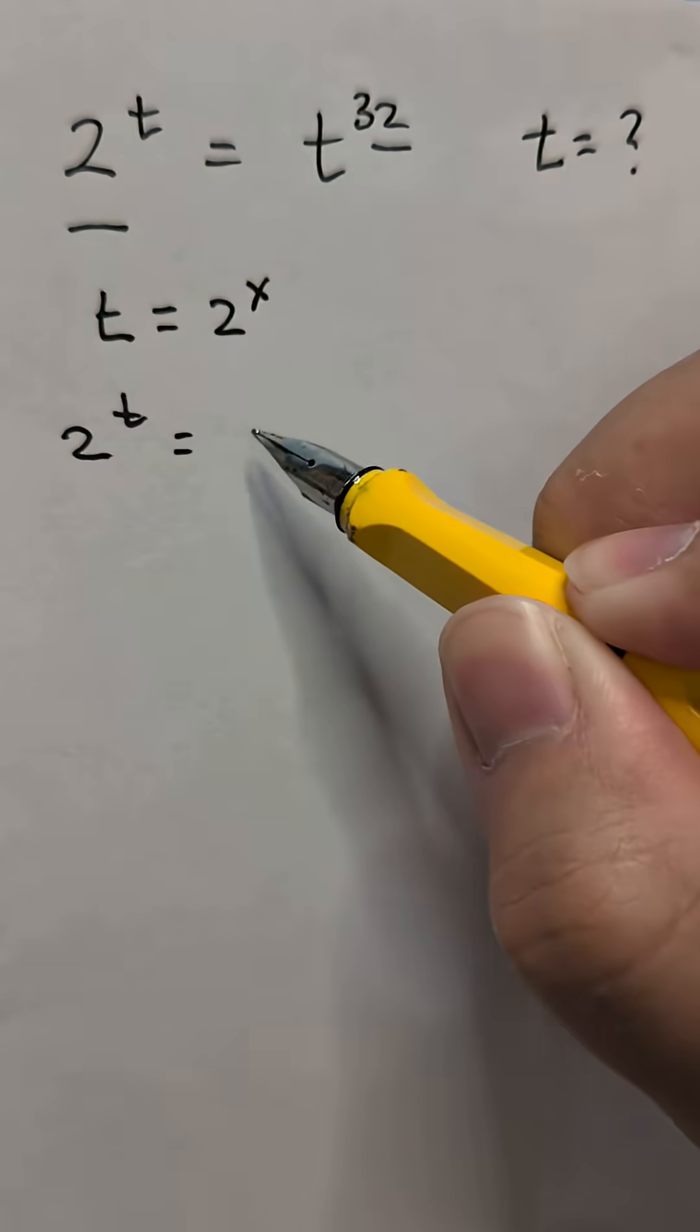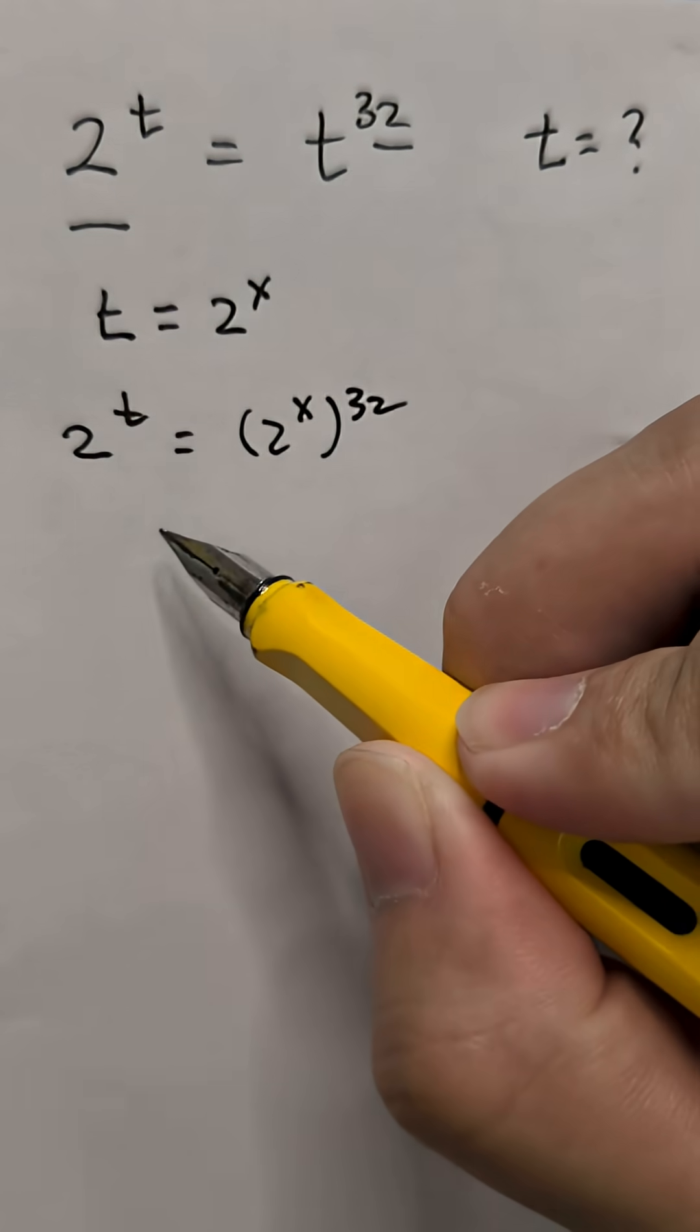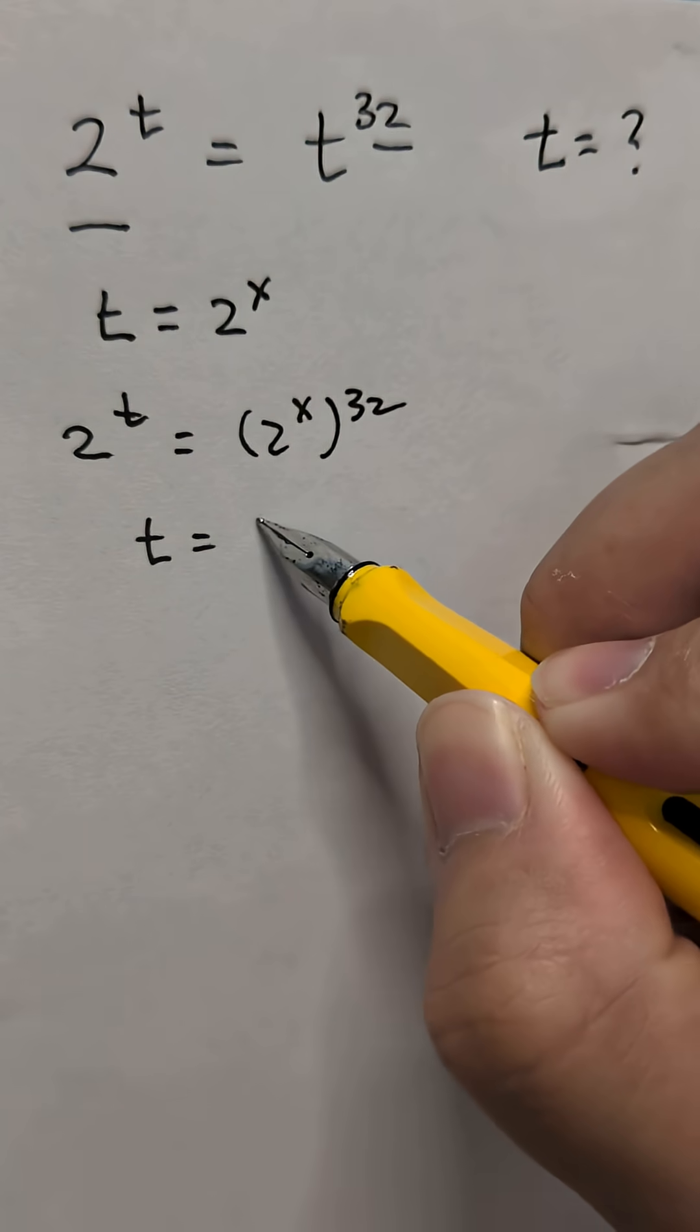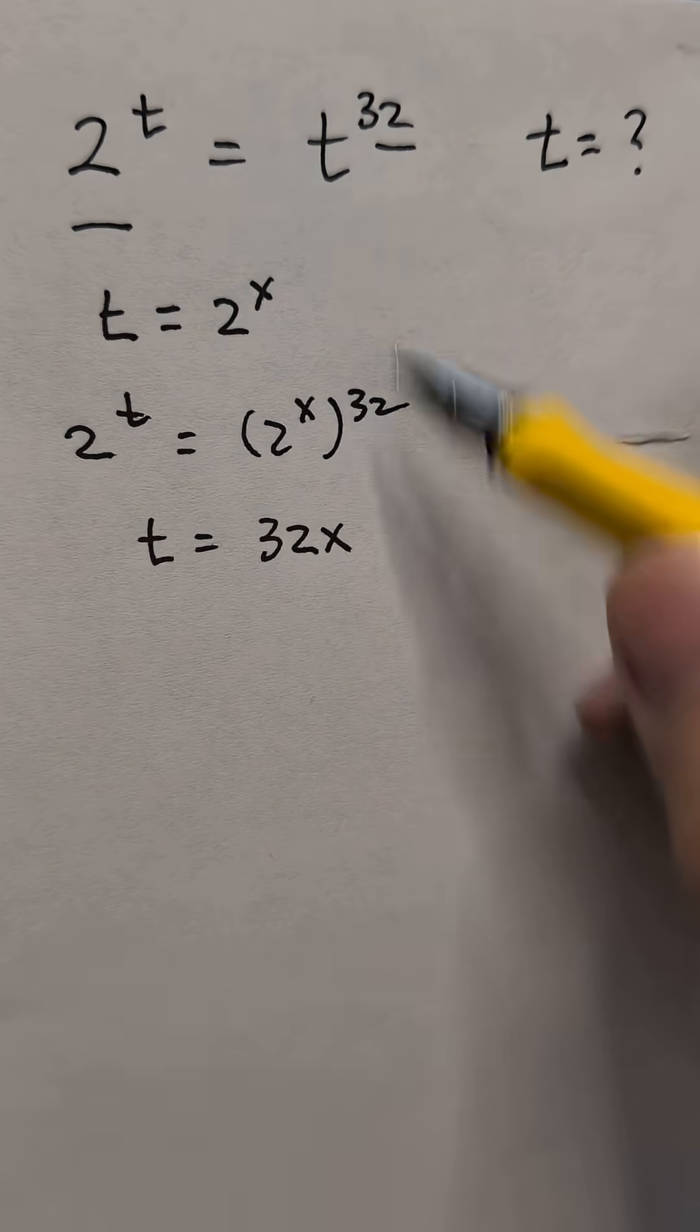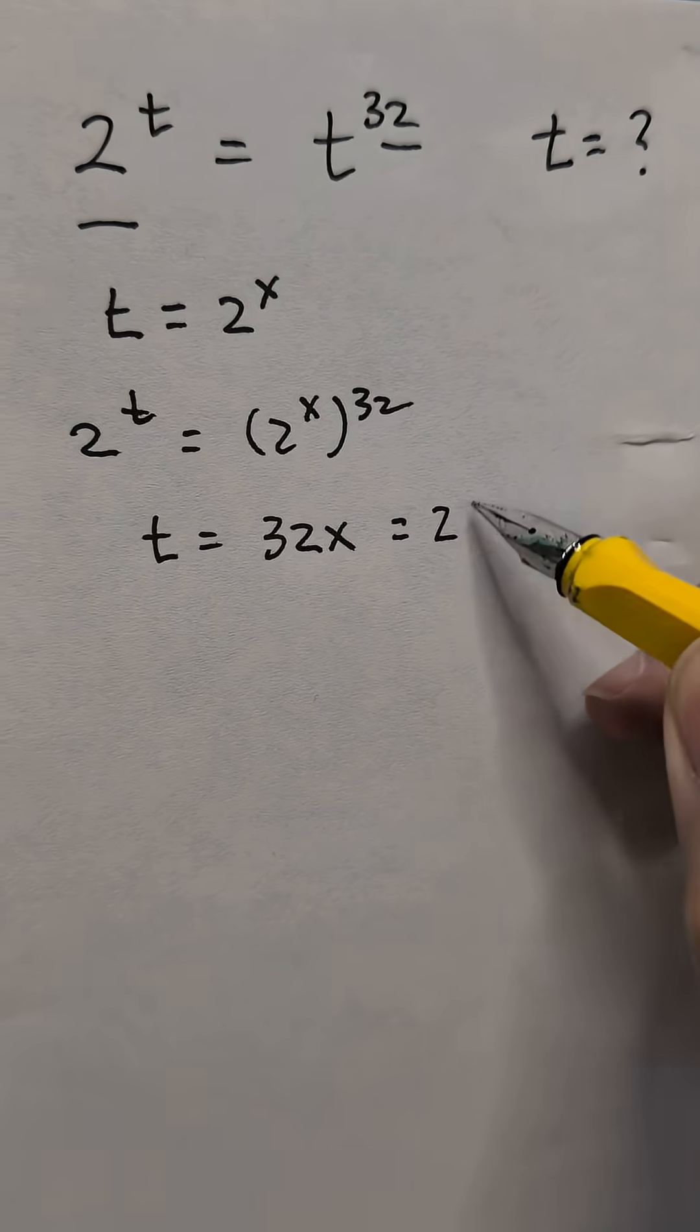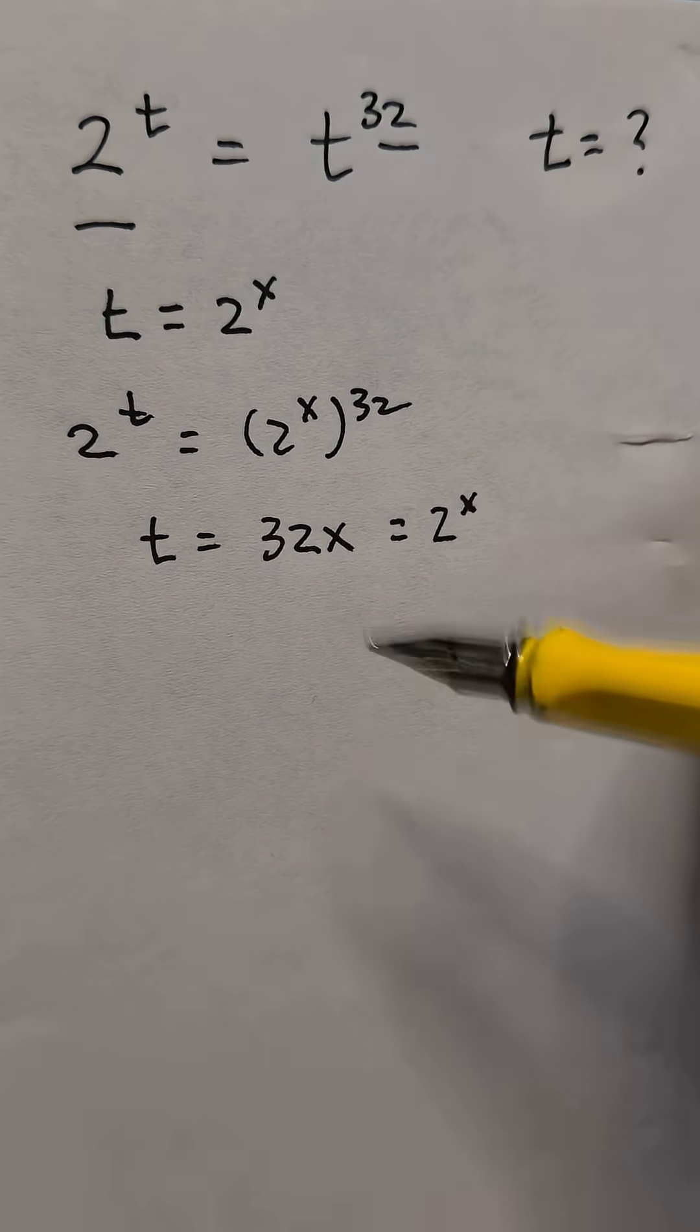2 to the power of 2^x equals (2^x)^32. So we get that t equals 32x. The powers equals each other. But we also know that t equals 2^x. So basically, we just brought everything down.